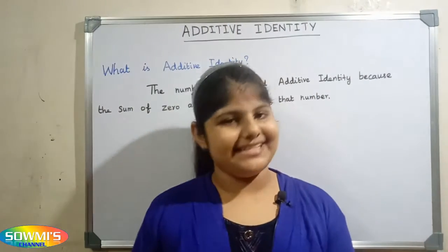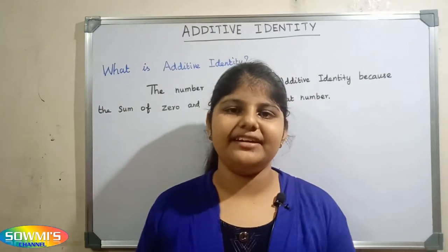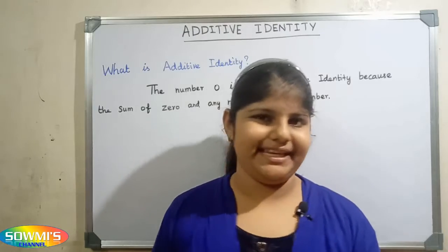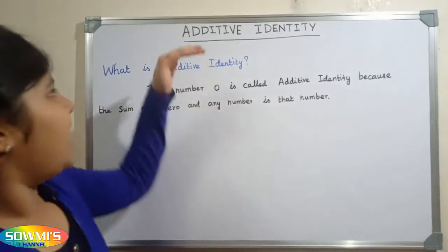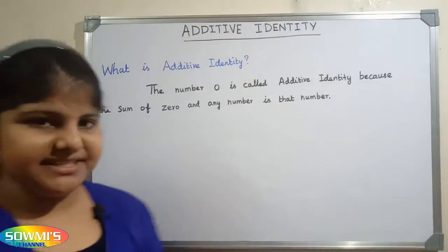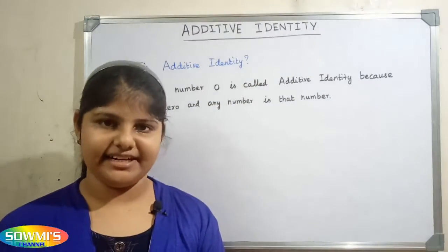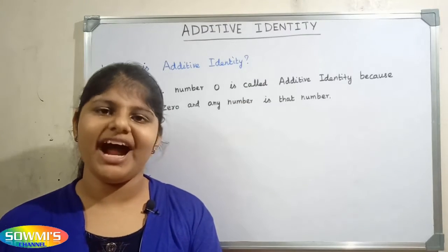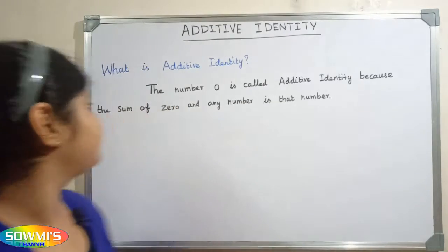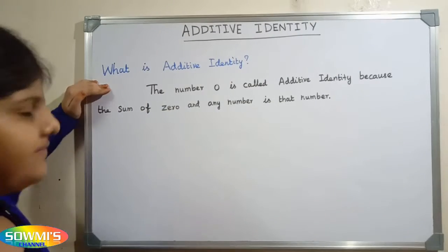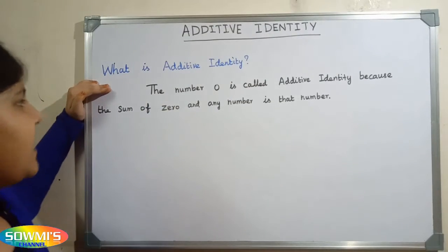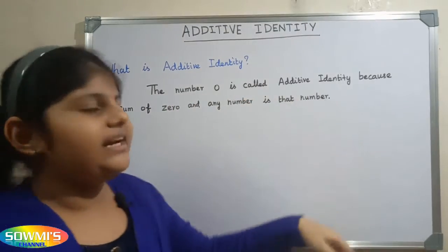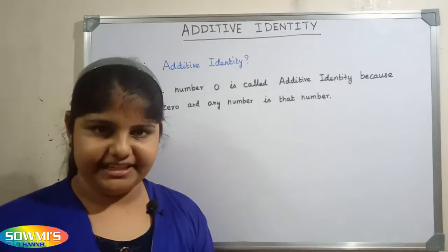Hi friends, this is Swami's channel. In this video we are going to see additive identity. Additive identity is one of the properties of addition. Now we will see what is additive identity: the number zero is called additive identity.